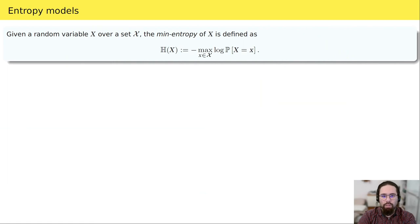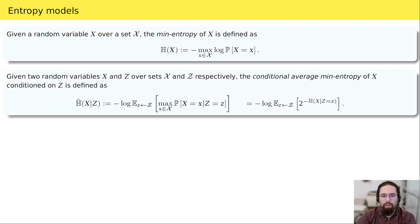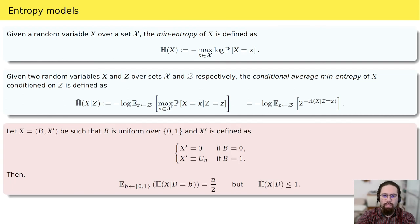Before introducing the leakage models, we need to talk about min-entropy. Intuitively, the min-entropy measures how hard it is to guess the outcome of the random variable x. Given two random variables, we adopt the definition of conditional average min-entropy of Dodis et al., because although being slightly counter-intuitive at first, it better captures the notion of residual entropy after learning the outcome of z.